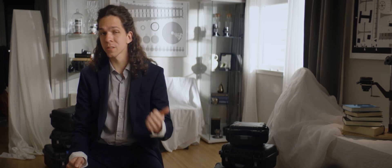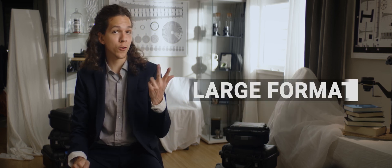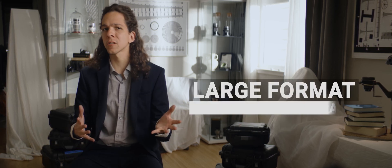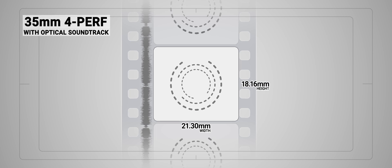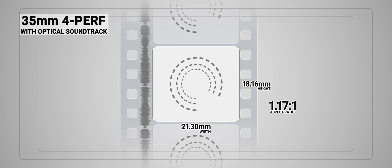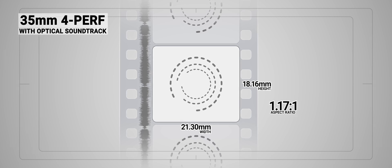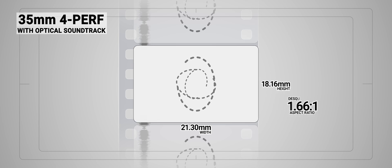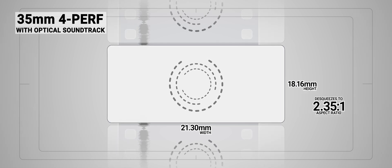35mm — for historical reasons — Super 35, now also called APS-C, and Large Format, which is popularly known as VistaVision or Full Frame. It all starts with 4-perforation 35mm film, considering a little bit of area for an optical soundtrack. This made the size of the image area 21.3 x 18.16mm, giving us an aspect ratio of 1.17 to 1, which is pretty square. But once you throw an anamorphic lens in front, it expands to the most popular 2.35 to 1.